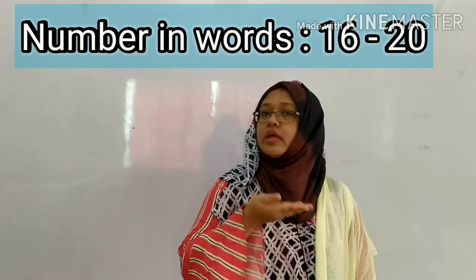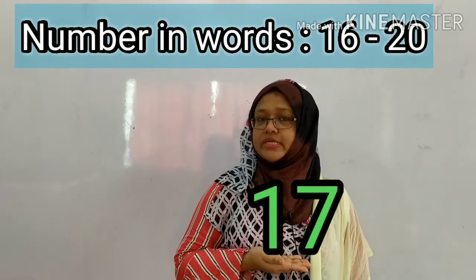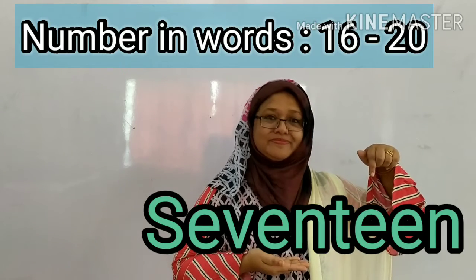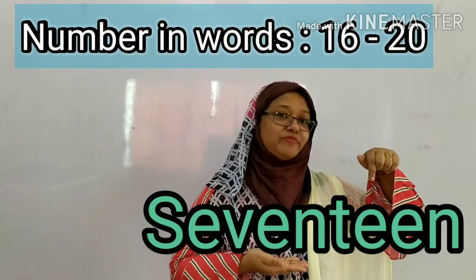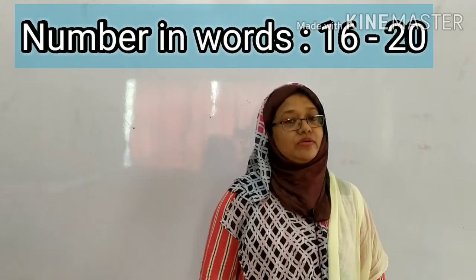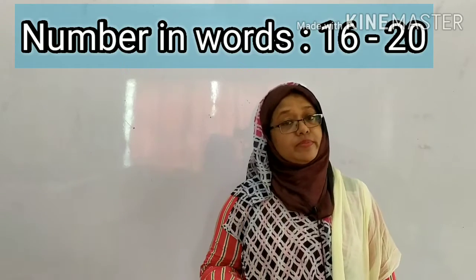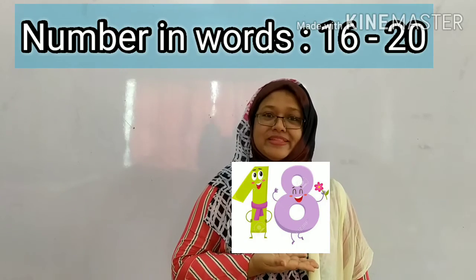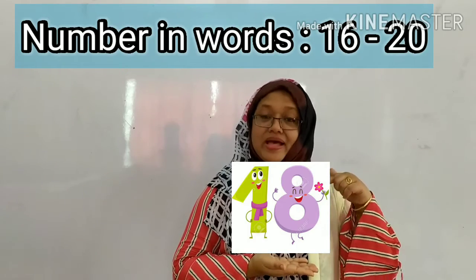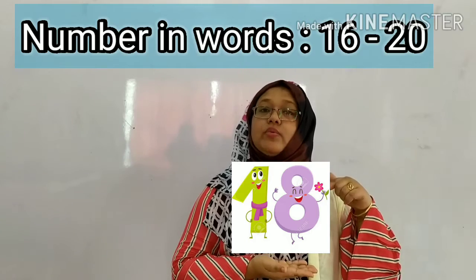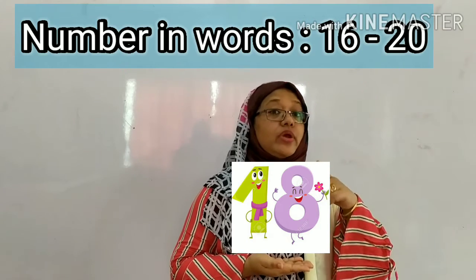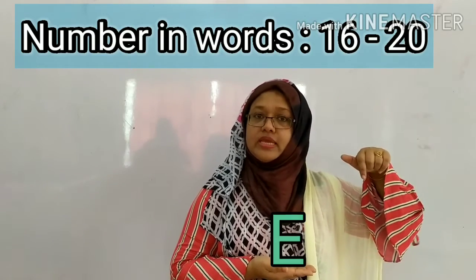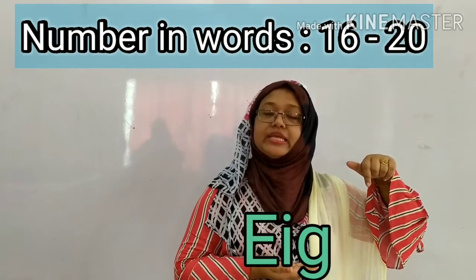This is number 17. What is the spelling of 17? Yes, you are absolutely right. Now after 17, which number comes? 18, right. Look, this is number 18. What is the spelling of 18? You can spell 8, so spell the number 8 first: E-I-G-H-T.